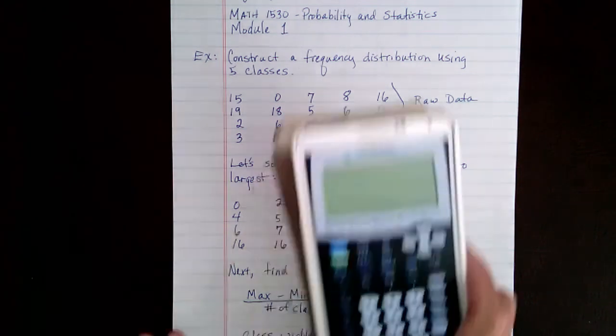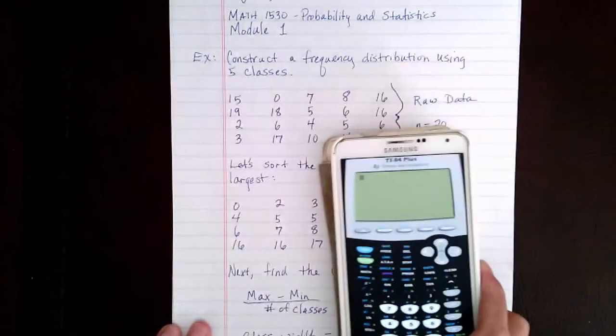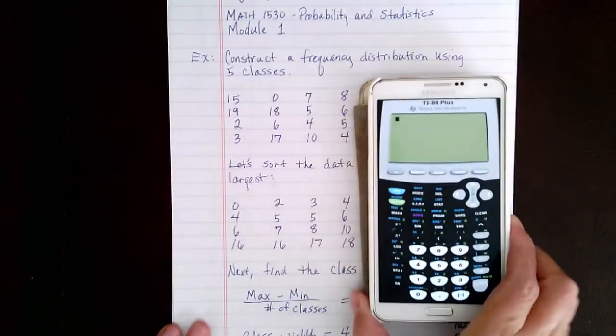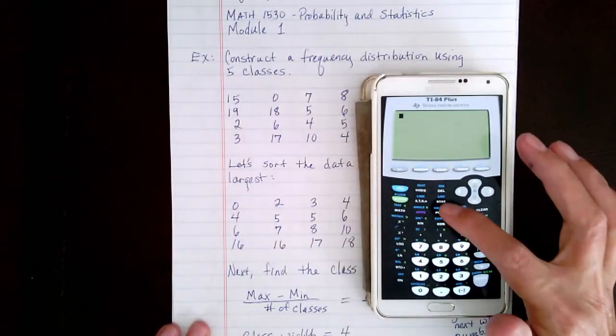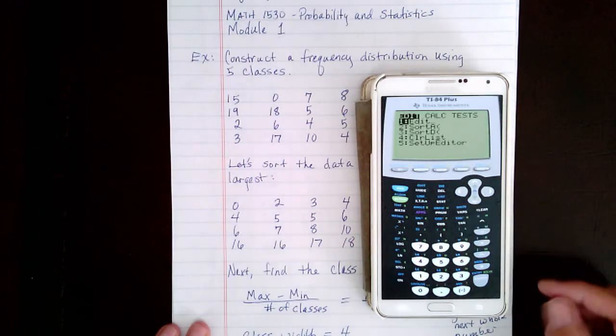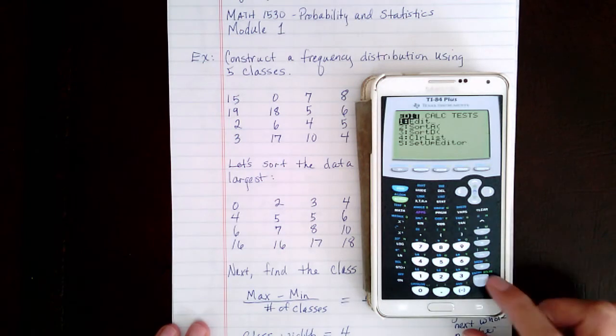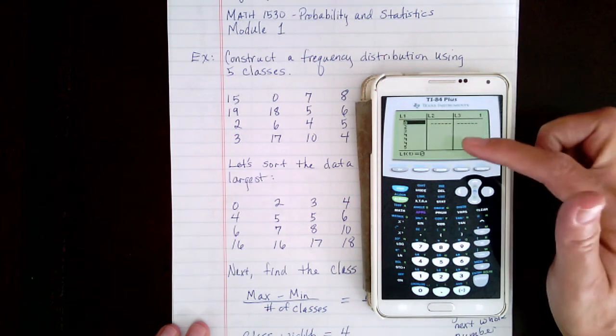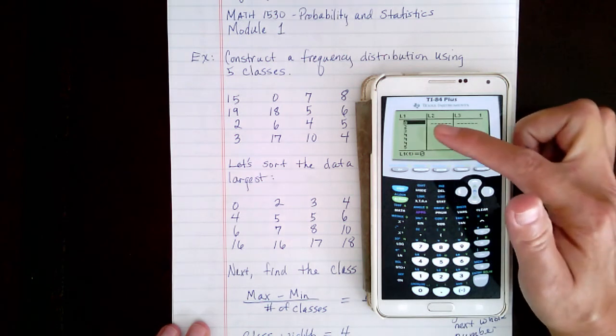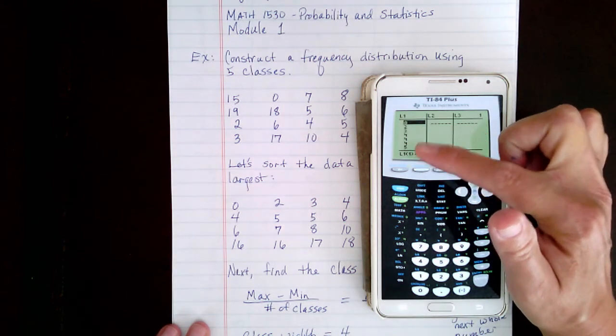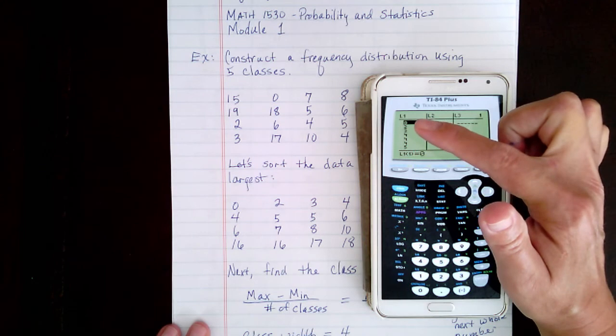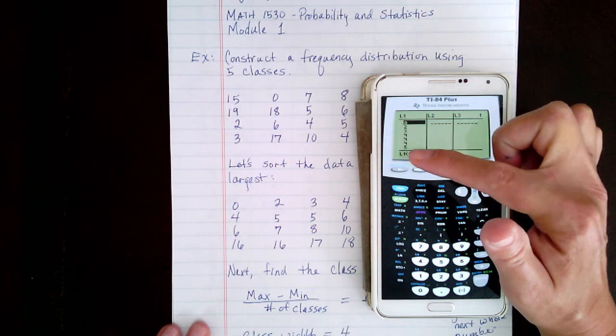So here is my calculator, and I'll show you how to do this briefly. You'll hit your STAT button and leave it on the Edit screen, and enter all of the raw data in List 1. Now I've already done this, so just go ahead and put all of your raw data in List 1.